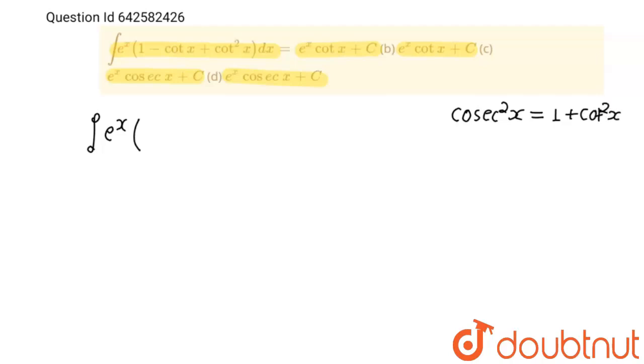So we will write cosec square x in place of 1 plus cot square x minus cot x dx.